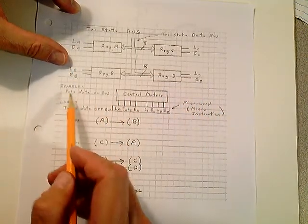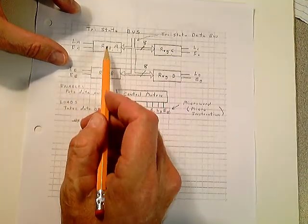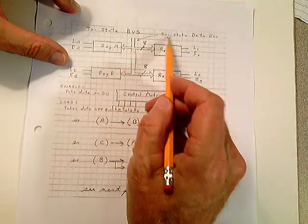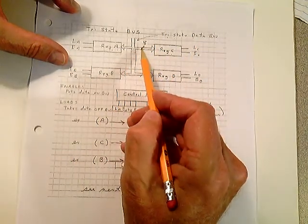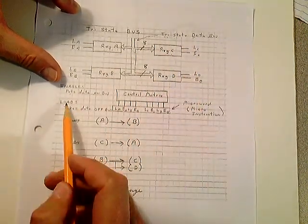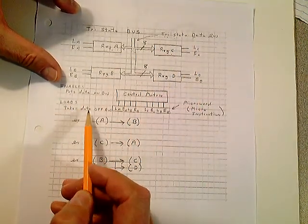Keep in mind that when you enable something, it puts data on the bus. When you enable a register, it takes what's in the register and puts it out here on this bus. This tri-state data bus. Matter of fact, it's an 8-bit tri-state data bus in this example. When you load something, you take data off the bus.